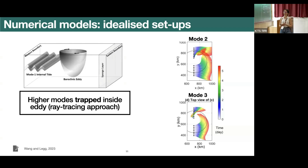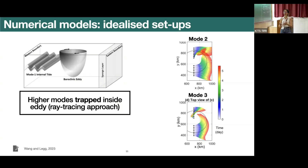Looking at higher modes — mode two and three — they do ray tracings starting from points on the figure; the circle indicates the eddy and the colors indicate time in days. What they find is that the higher the mode, the longer these rays are trapped inside the eddy.